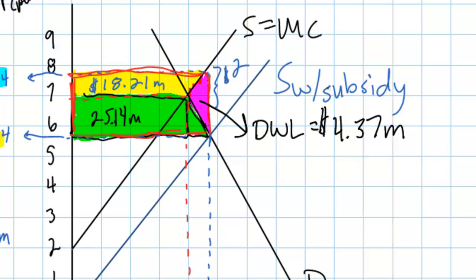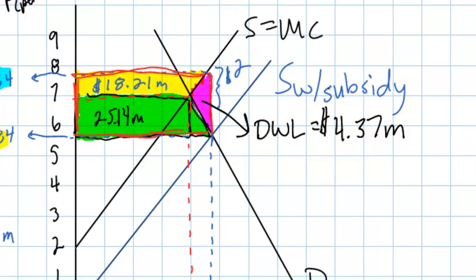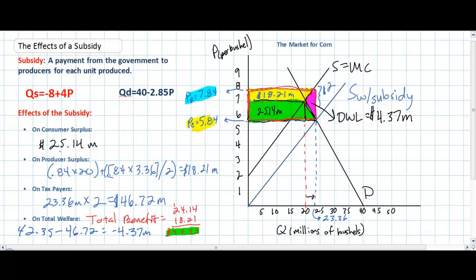This $4.37 million represents the loss of total welfare resulting from the government using taxpayer money to subsidize corn producers. The cost of the subsidy exceeds the increase in benefit to corn producers and consumers by $4.37 million. Therefore, we can conclude that this subsidy is inefficient, since that money could have been used more efficiently for other public goods. In this video, we explained how linear equations can be used to determine the exact quantitative effects a subsidy has on equilibrium price, quantity, consumer surplus, producer surplus, and total welfare. A subsidy is ultimately inefficient because in most cases the total cost exceeds the total benefit.